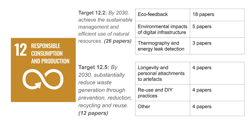26 papers were mapped to target 12.2: By 2030, achieve sustainable management and efficient use of natural resources. 12 papers were mapped to target 12.5: By 2030, substantially reduce waste generation through prevention, reduction, recycling and reuse.